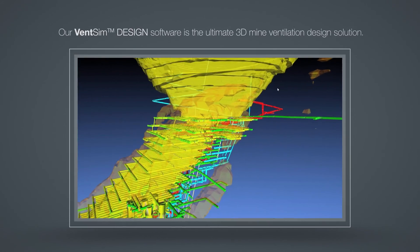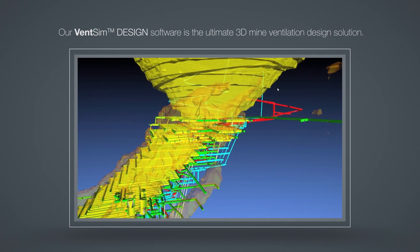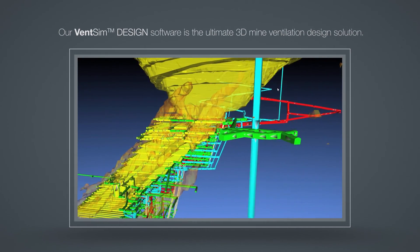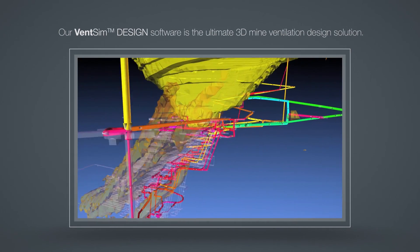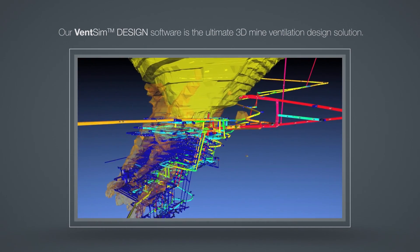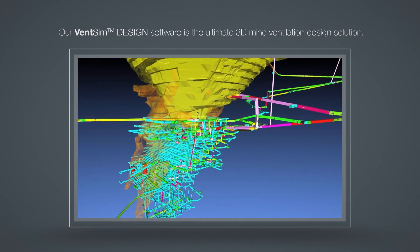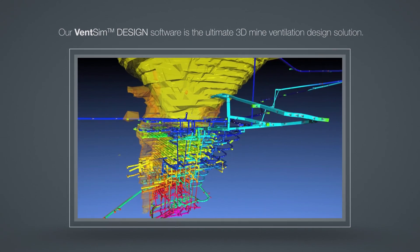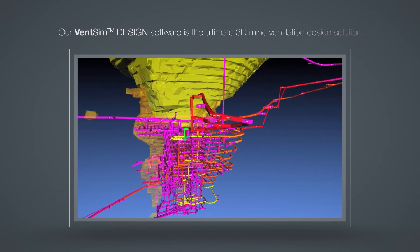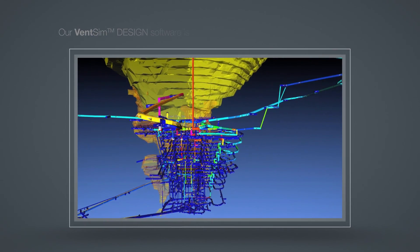Various colors indicate over 70 different data types including air flow, velocity, pressure, temperature, contaminants, and costs.